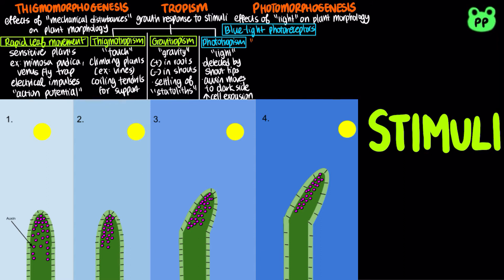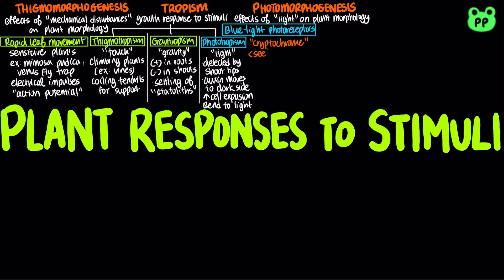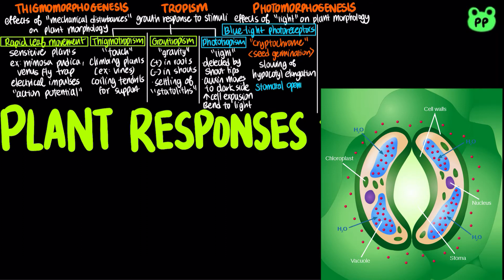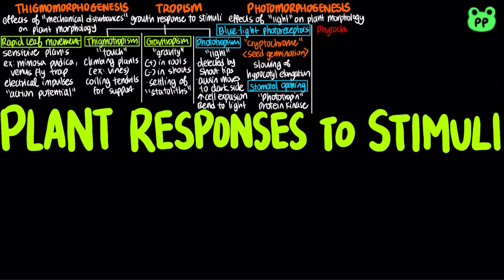Blue light photoreceptors known as cryptochromes play a role in seed germination. Detection of blue light slows hypocotyl elongation. Blue light photoreceptors also play a role in stimulating stomatal opening, allowing carbon dioxide to enter the plant and undergo photosynthesis. Blue light photoreceptors stimulate stomatal opening through protein kinases known as phototropins.